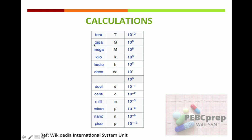One more thing to remember: tera equals 10 to the power 12, giga equals 10 to the power 9, mega equals 10 to the power 6, kilo equals 10 to the power 3, hecto equals 10 to the power 2, deca equals 10 to the power 1. Similarly, deci equals 10 to the power minus 1, centi equals 10 to the power minus 2, milli equals 10 to the power minus 3, micro equals 10 to the power minus 6, nano equals 10 to the power minus 9, pico equals 10 to the power minus 12. The reference is Wikipedia International System of Units — I'll give the link in the description.